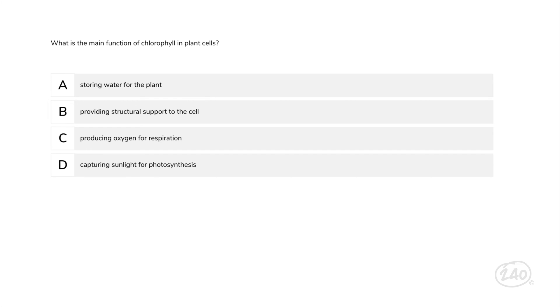Onward to a life science practice question. What is the main function of chlorophyll in plant cells? Chlorophyll captures sunlight for photosynthesis, the process by which plants make food. So option D is correct. Life science, nailed it!